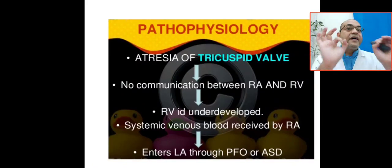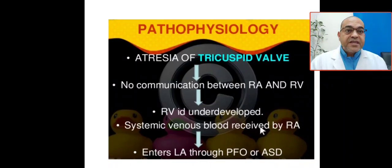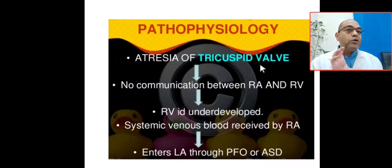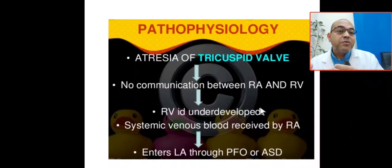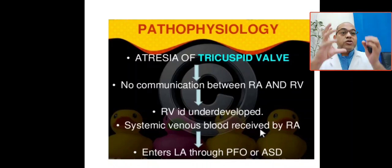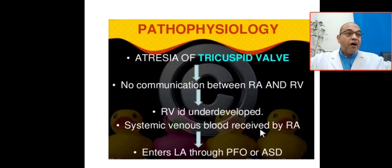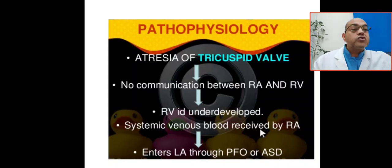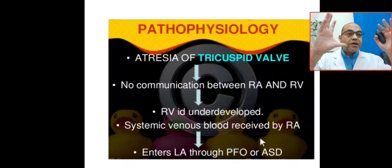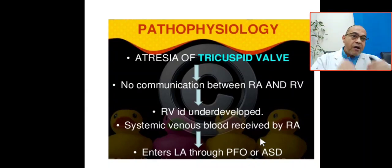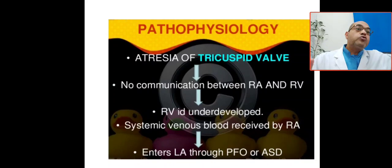In the pathophysiology of tricuspid valve atresia: there is atresia of the tricuspid valve, so no communication between right atrium and right ventricle. The right ventricle becomes hypoplastic. All systemic venous blood is received by the right atrium, building up very high pressure. This forces blood through the ASD or patent foramen ovale to the left atrium — because the tricuspid valve is closed, no blood goes to the right ventricle. All blood in the right atrium goes through the ASD or PFO to the left atrium.